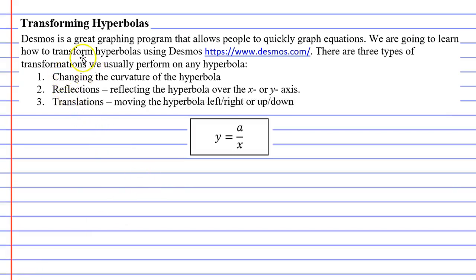In this video we're going to look at ways you can transform hyperbolas, using a program called Desmos, which is a graphing program, to help us visualize this. There are three transformations we're going to perform. The first one is changing the curvature of the hyperbola. The second transformation is reflection — we reflect the hyperbola over the x or the y-axis — and the third transformation is called a translation.